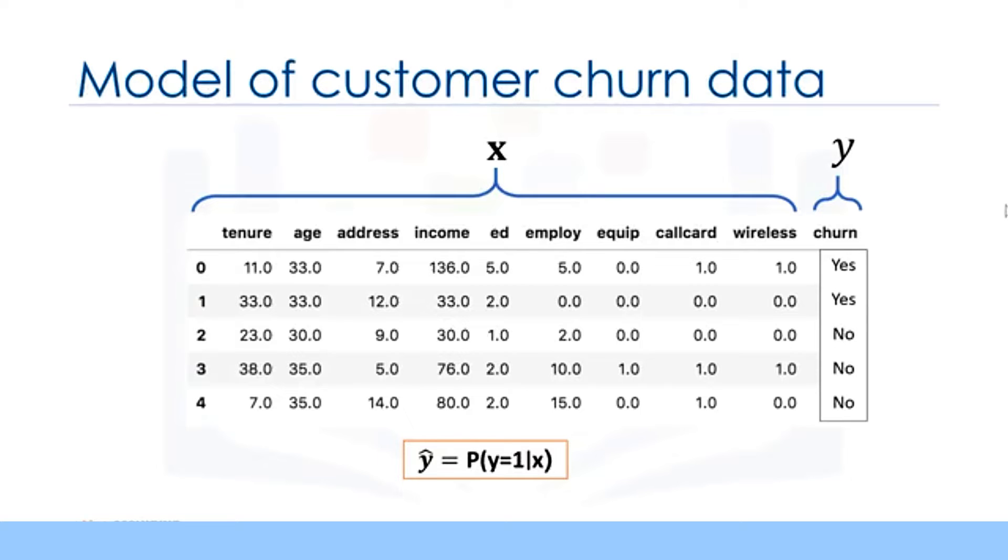Let's look at the telecommunication dataset again. The goal of logistic regression is to build a model to predict the class of each customer and also the probability of each sample belonging to a class. Ideally, we want to build a model, y hat, that can estimate that the class of a customer is 1, given its feature is x. Mapping the class labels to integer numbers, can we use linear regression to solve this problem?